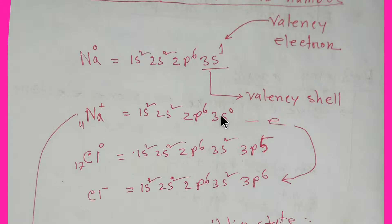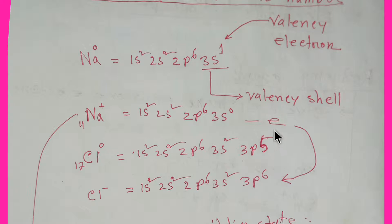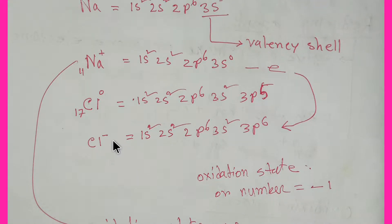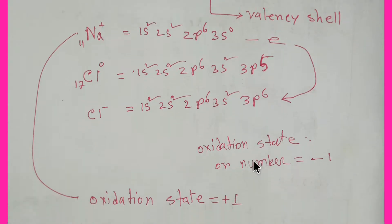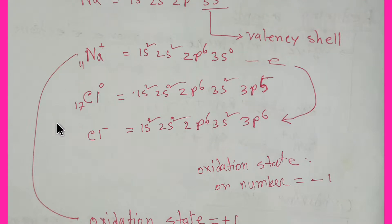When sodium chloride is formed, sodium has to lose one electron, giving it a +1 charge. In the case of chlorine, in its normal state there is no charge — the oxidation state of chlorine is zero. But when sodium chloride forms, chlorine takes one electron from sodium, so one electron is added to chlorine's valence shell, making its oxidation state minus one.